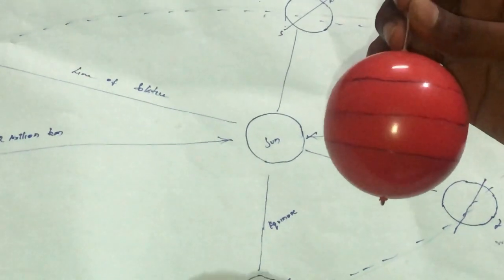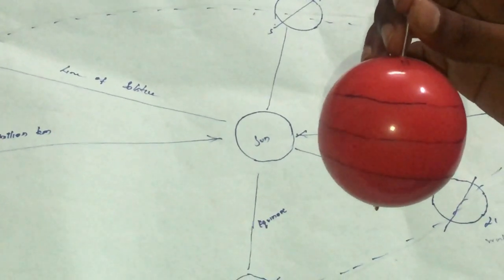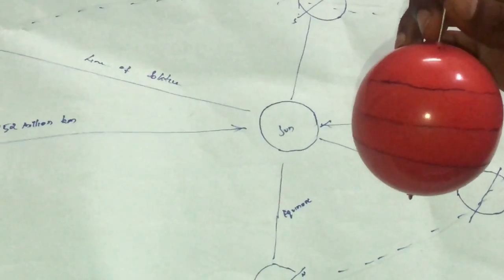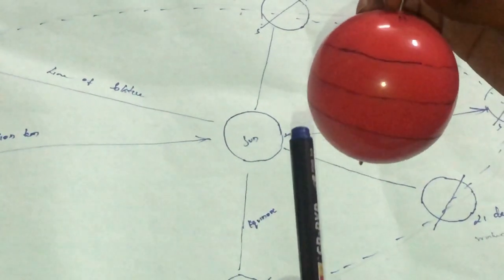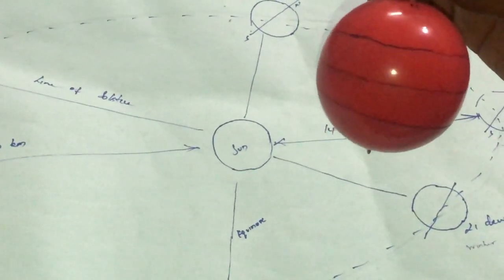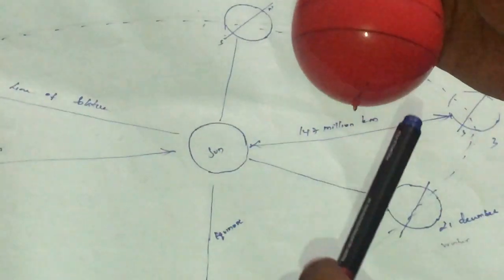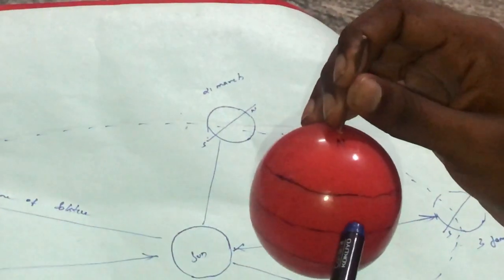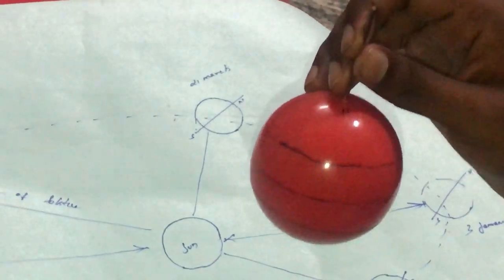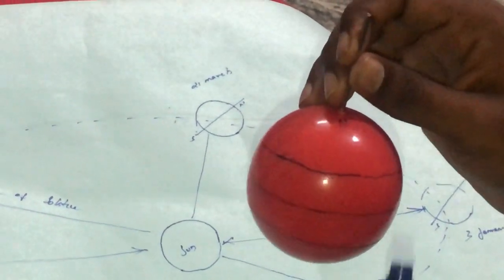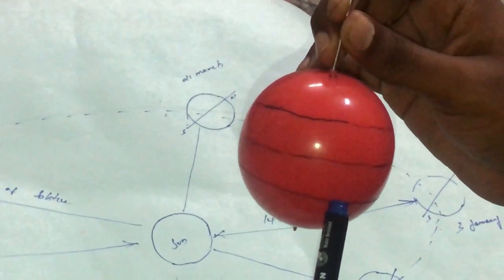I am going to give you a small introduction about the equator, Tropic of Cancer, and Tropic of Capricorn. In the central line, there is the equator. The Tropic of Cancer is 23.5 degrees north, and the Tropic of Capricorn is 23.5 degrees south.